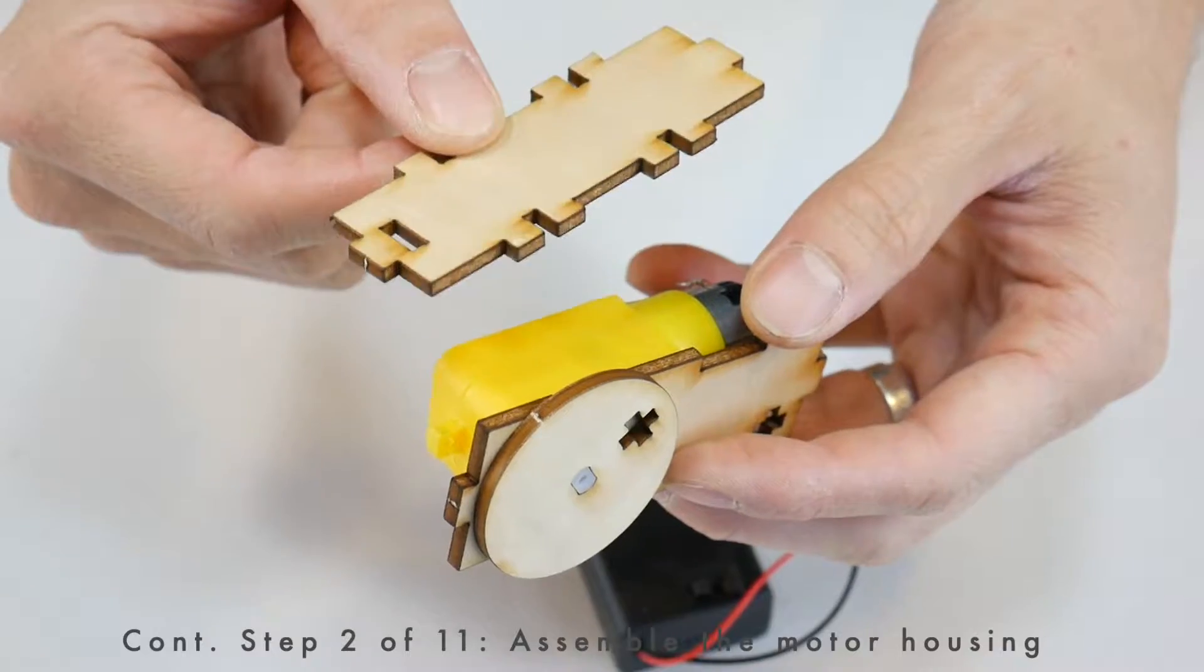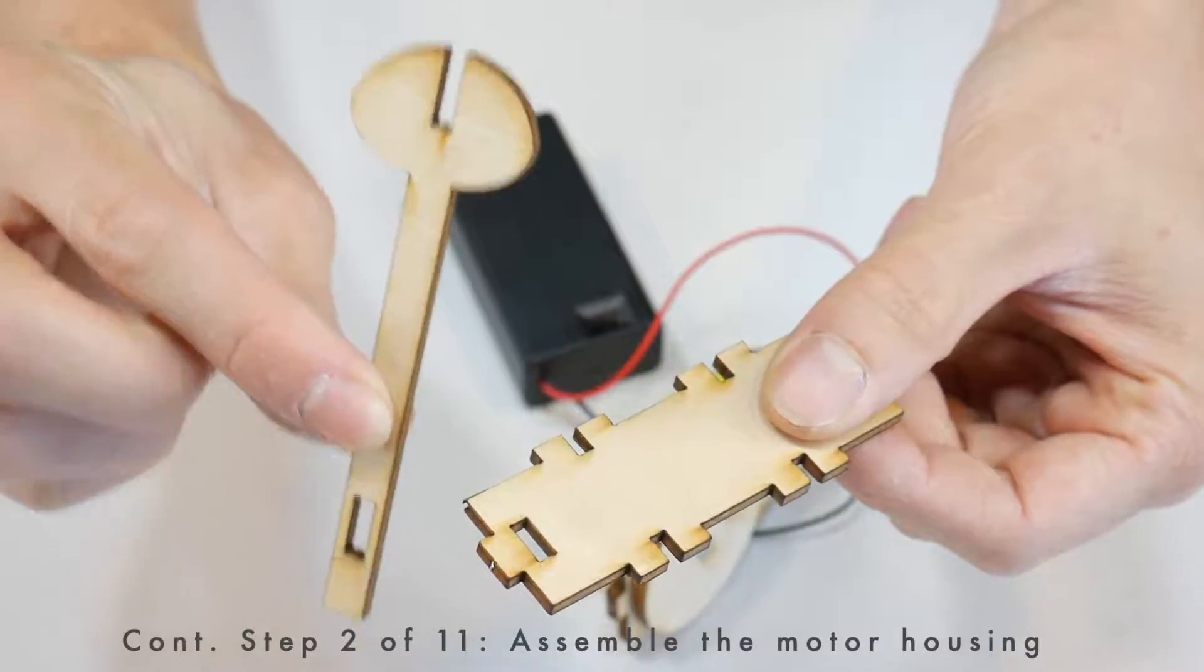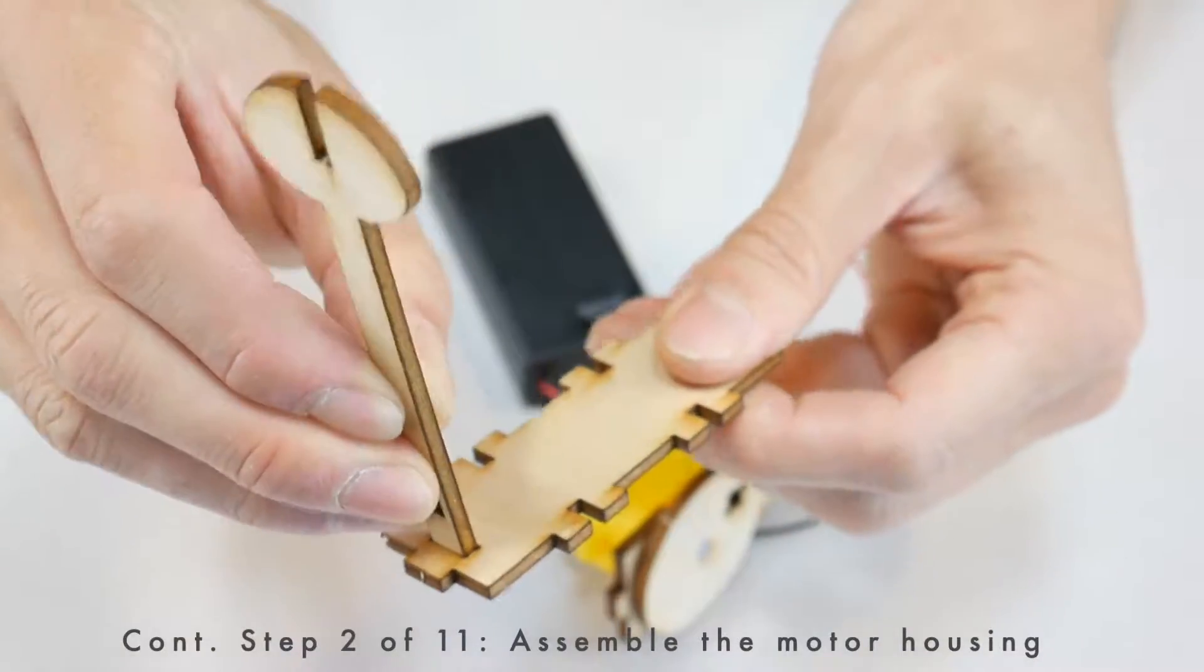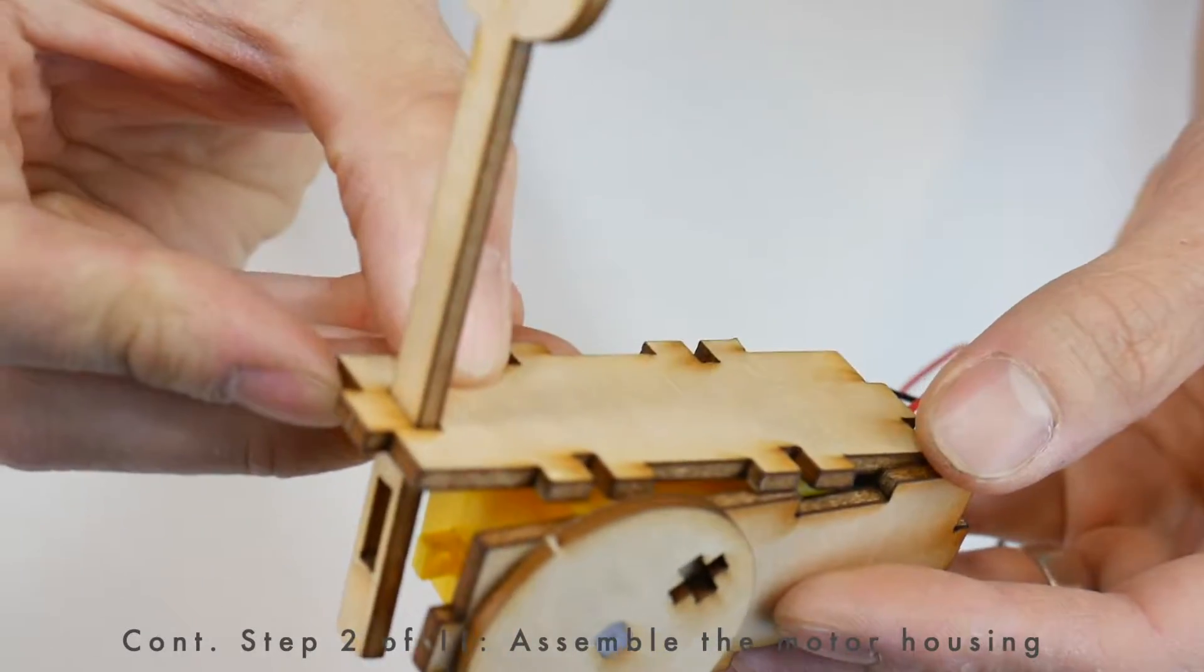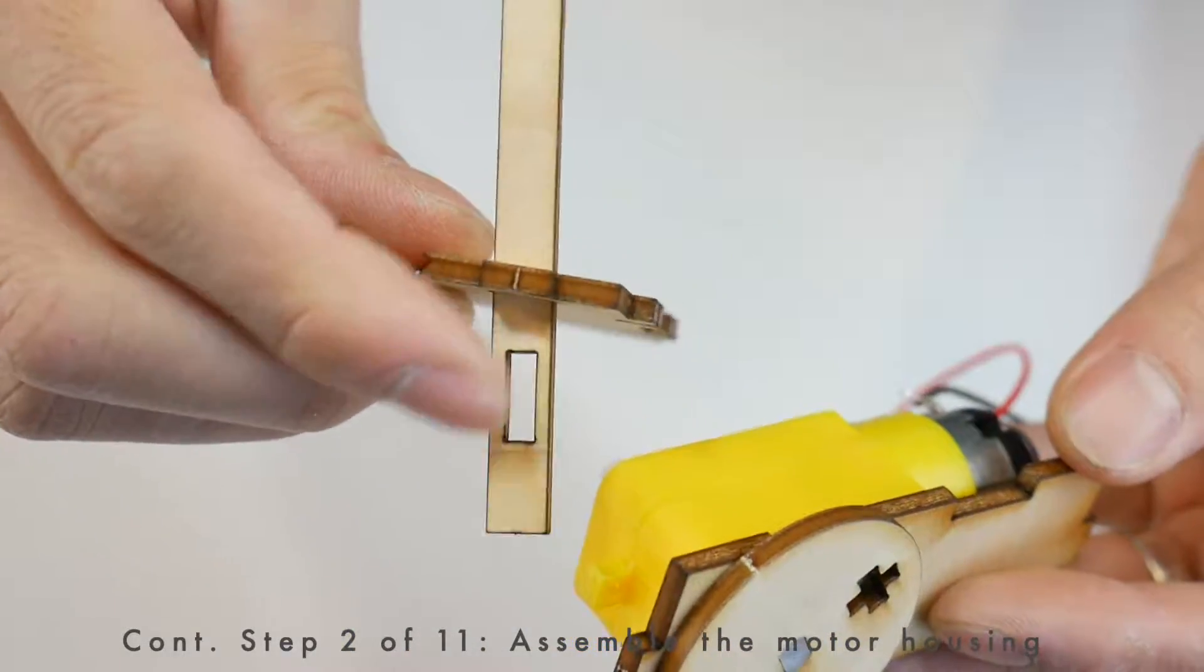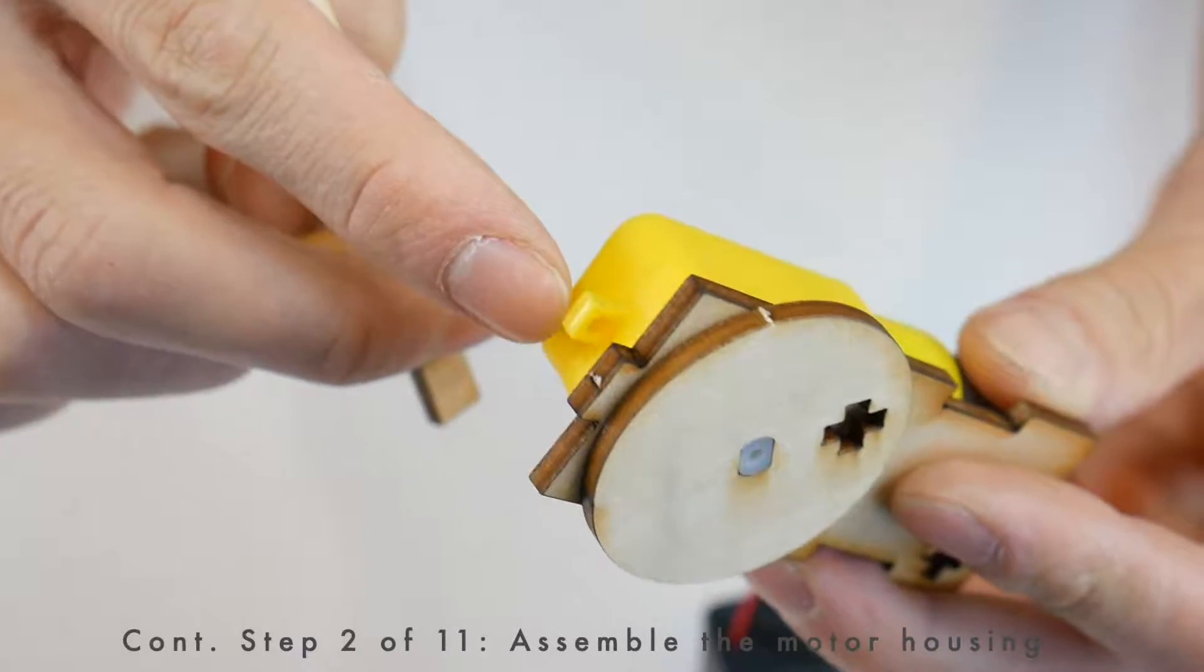Now before installing the top piece, we need to introduce one more part. Get this fork-shaped piece and put it through this slot in the top piece, like that. When you're attaching this piece to the top of the robot, make sure that this slot goes over this little plastic bit that's at the end of the motor.